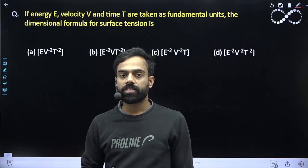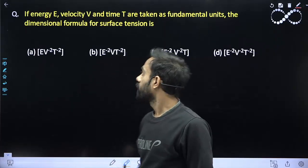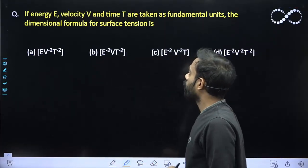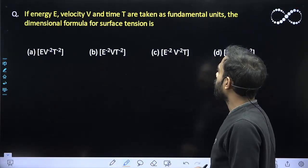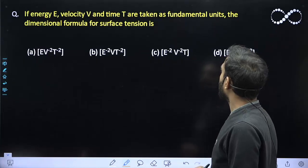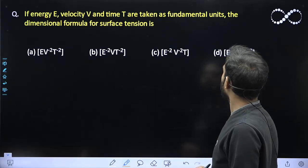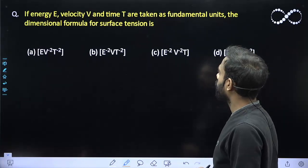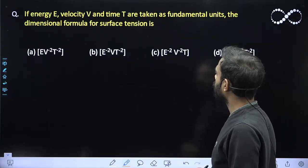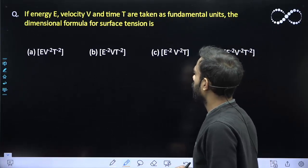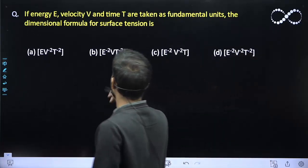Hello students! Let us see this question here. If energy E, velocity V and the time T are taken as fundamental units, then dimensional formula for the surface tension S — this I need to find.